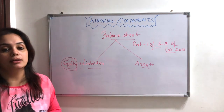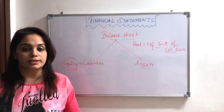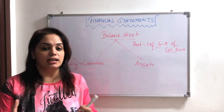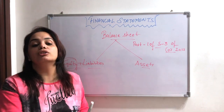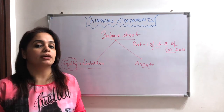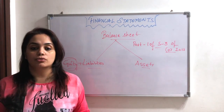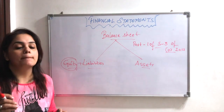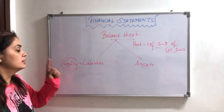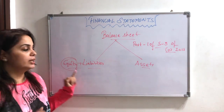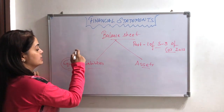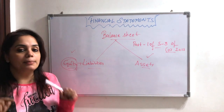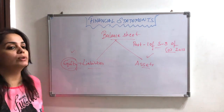We will not use the term 'capital' here; we will use 'equity.' How does equity come to a company? When a company issues shares, the people who buy those shares automatically become our company's owners. That is why the left-hand side says equity plus liabilities, and the right-hand side is our assets. So now we will discuss equity plus liabilities.